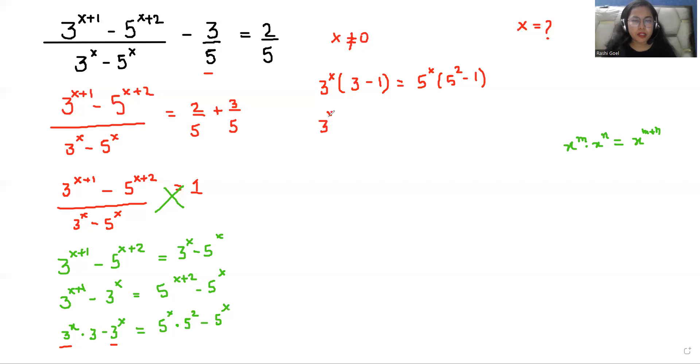3 power x times 3 minus 1 is 2 and 5 power x, 5 square is 25 and 25 minus 1 is times 24.